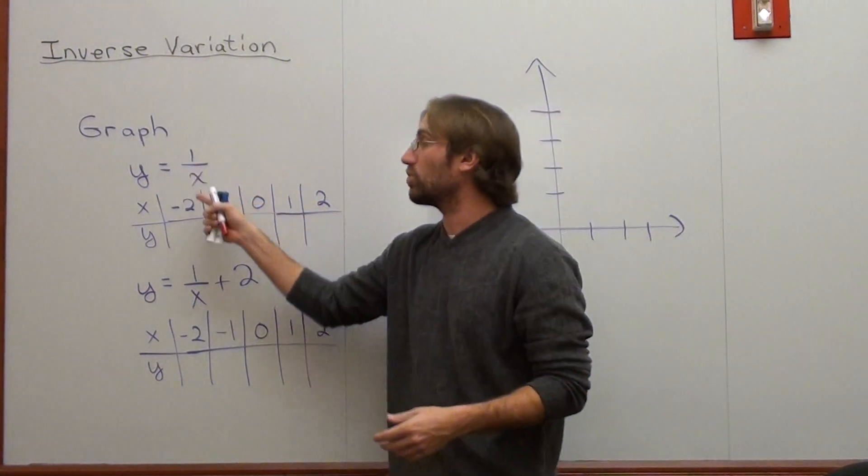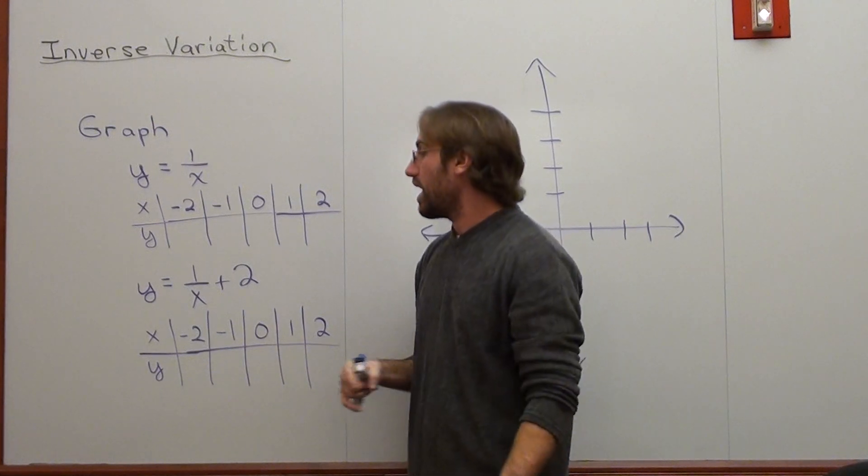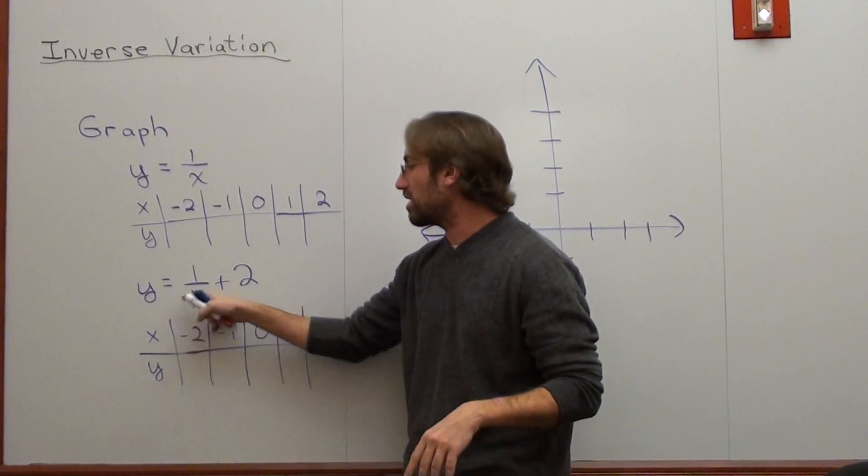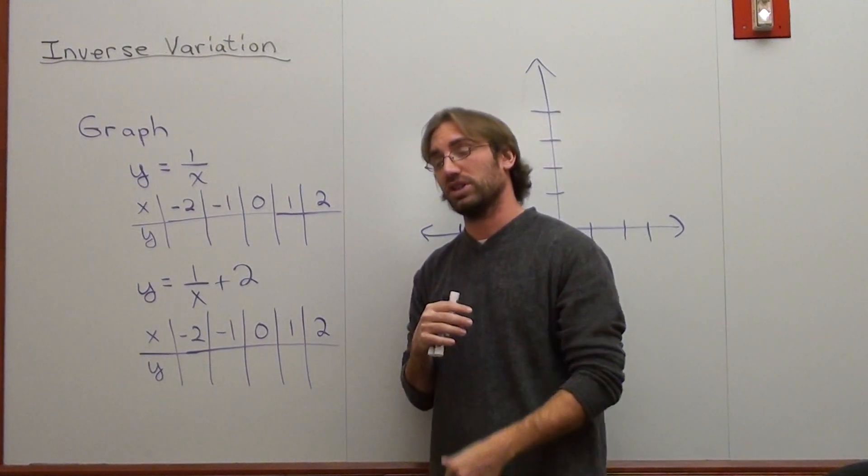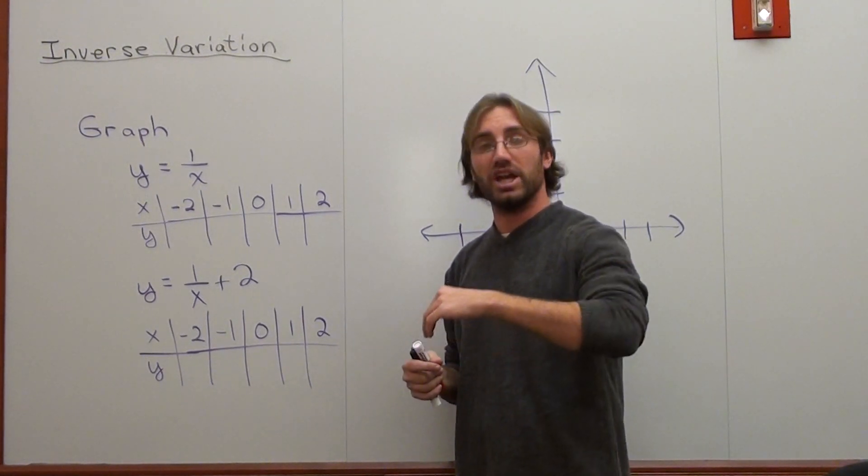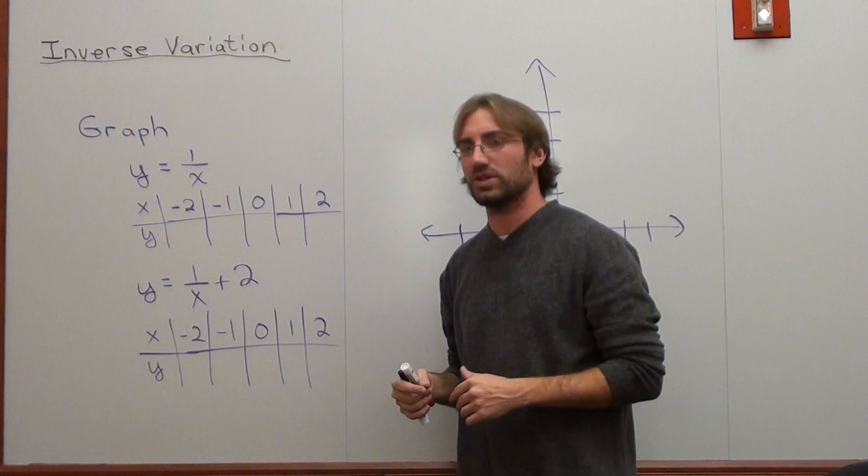And I got two here right now: y equals 1 over x, which is our basic one, and this time I added some flavor to it, y equals 1 over x plus 2. And this actually changes more than just the graph itself. It actually changes the horizontal asymptote of the graph as well.